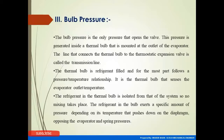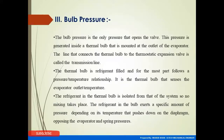Bulb pressure — let us see what bulb pressure is. The bulb pressure is the only pressure that opens the valve. This pressure is generated inside a thermal bulb that is mounted at the outlet of the evaporator. The line that connects the thermal bulb to the thermostatic expansion valve is called the transmission line. The thermal bulb is refrigerant-filled and follows a pressure-temperature relationship. The refrigerant in the thermal bulb is isolated from the system refrigerant, so there is no mixing. The refrigerant in the bulb exerts a specific pressure depending on its temperature, pushing down the diaphragm and opposing the evaporator and spring pressure.